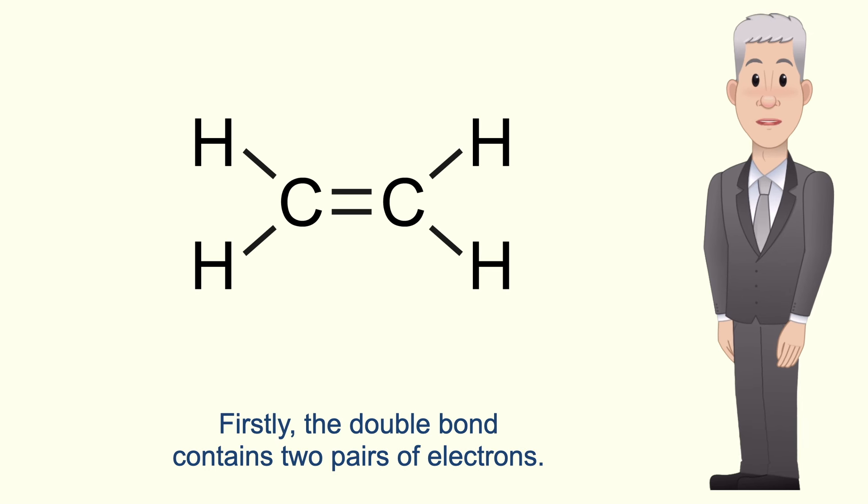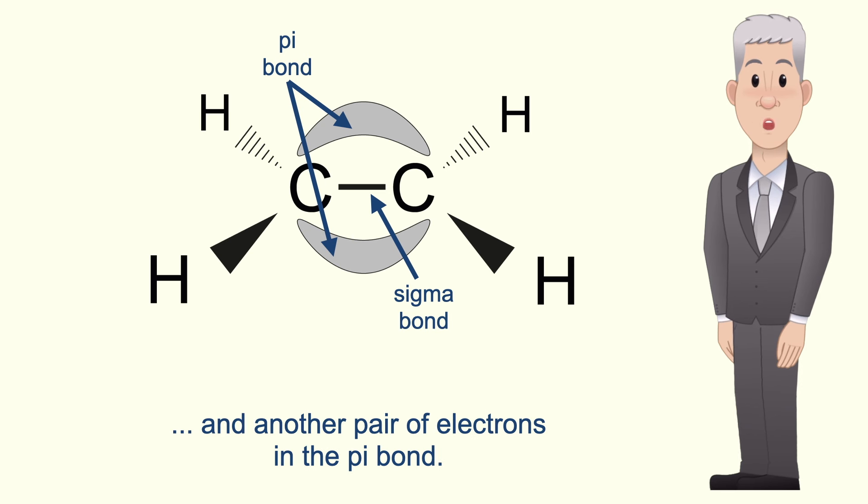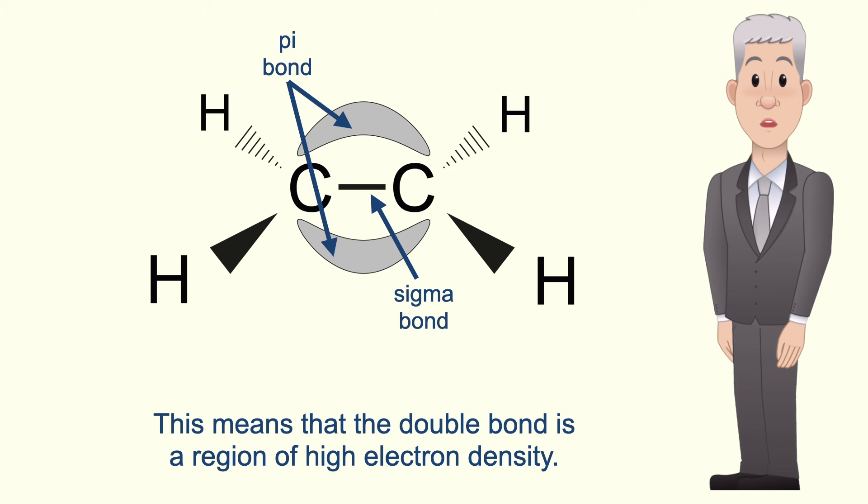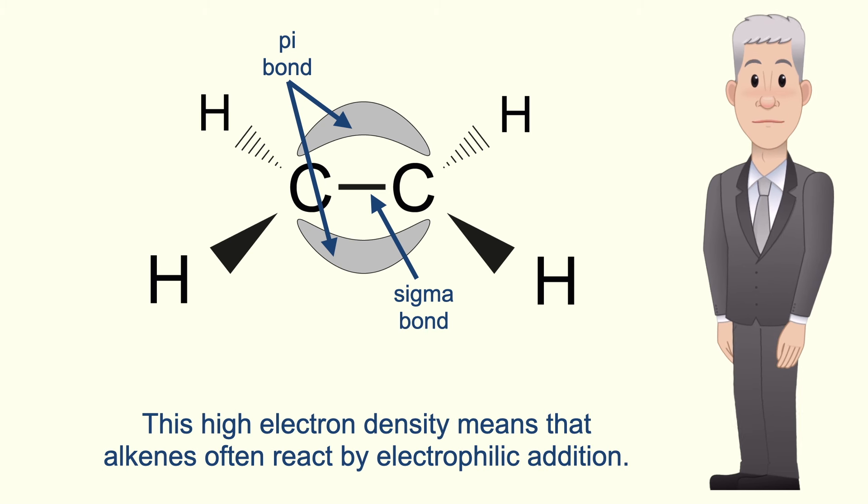Firstly, the double bond contains two pairs of electrons. We have a pair of electrons in the sigma bond and another pair of electrons in the pi bond. So this means that the double bond is a region of high electron density, and this high electron density means that alkenes often react by electrophilic addition.